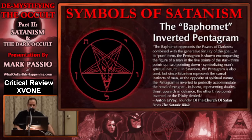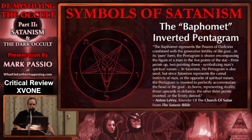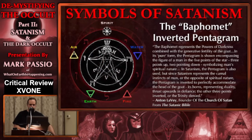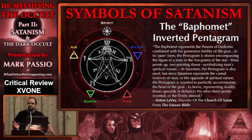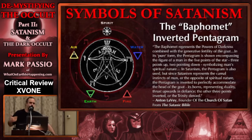In its pure form, the pentagram is shown encompassing the figure of a man in the five points of the star — three points up, two pointing down — symbolizing man's spiritual nature. They're so big on talking about the natural order, the dog-eat-dog world, and the most brutal rules the roost. But here, in another breath, he's saying the original pentagram represented man's spiritual nature.